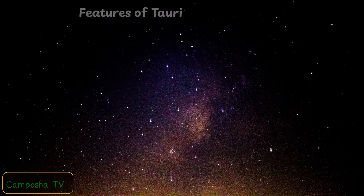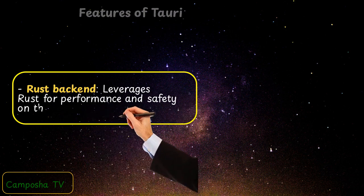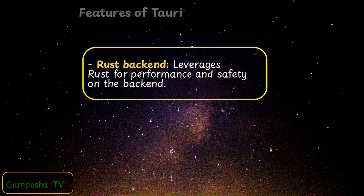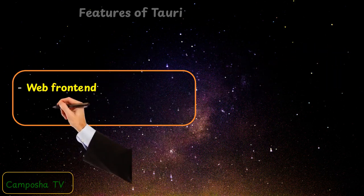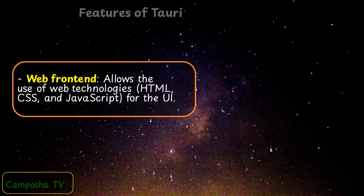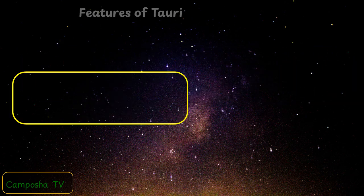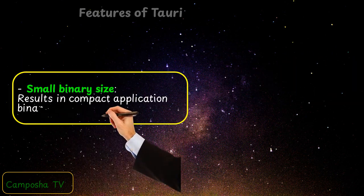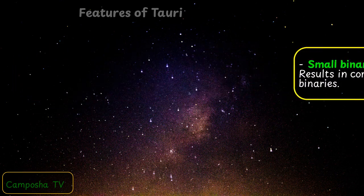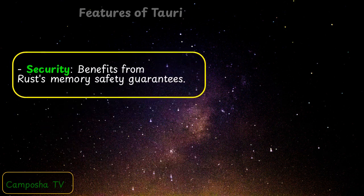Features of Torii: Rust Backend — leverages Rust for performance and safety on the back-end. Web Frontend — allows the use of web technologies, HTML, CSS, and JavaScript for the UI. Small Binary Size — results in compact application binaries. Security — benefits from Rust's memory safety guarantees.